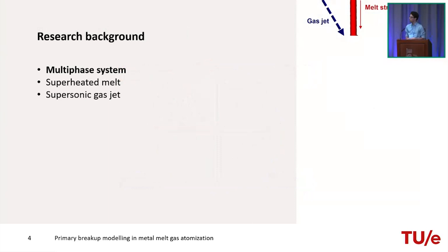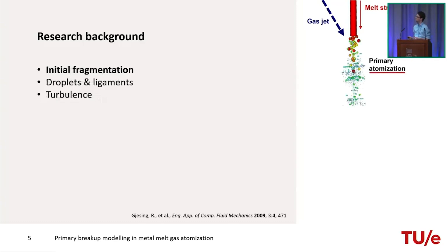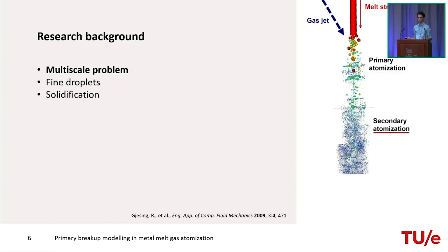The system consists of a superheated melt jet impinged upon by a supersonic gas jet, which ruptures it into droplets and ligaments. This initial fragmentation is primary atomisation, which is the main focus. The supersonic gas jet produces high turbulence, which is important to consider. Moving further downstream, this becomes a multiscale problem as droplets break up into finer sizes — typically around 10 micrometres — and then solidify into fine powder.